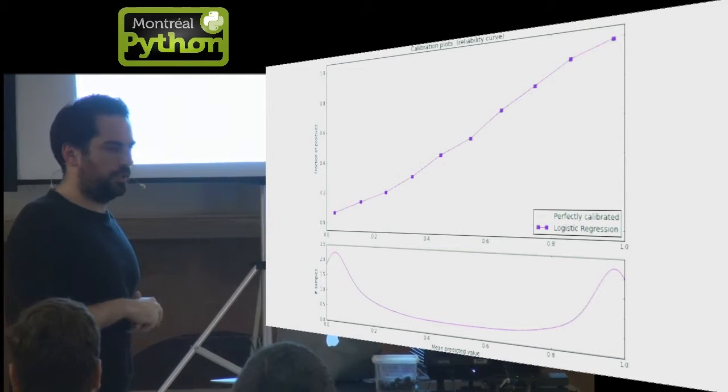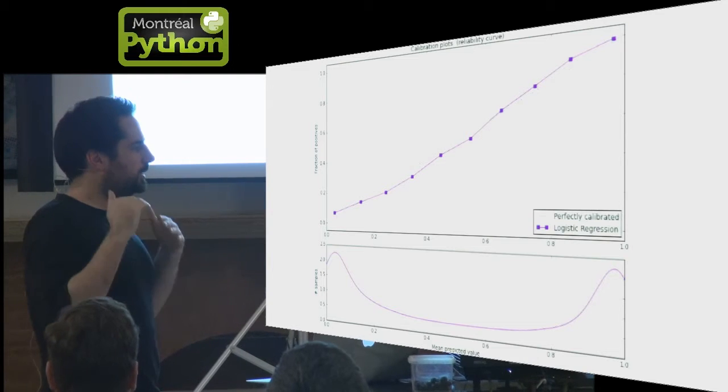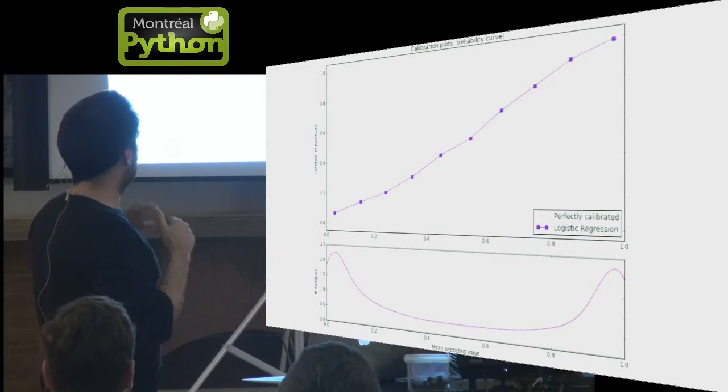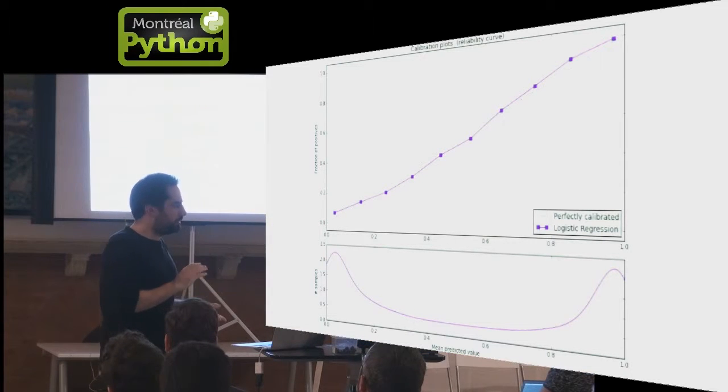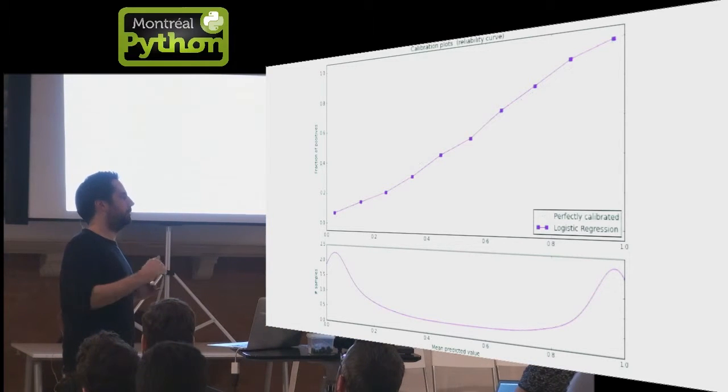On the other hand, if you take logistic regression, it's naturally a probabilistic model that directly tries to estimate this probability. So you see that by default it's well calibrated. The accuracy is not necessarily better, it can be exactly the same as the previous model, but it's calibrated by default.